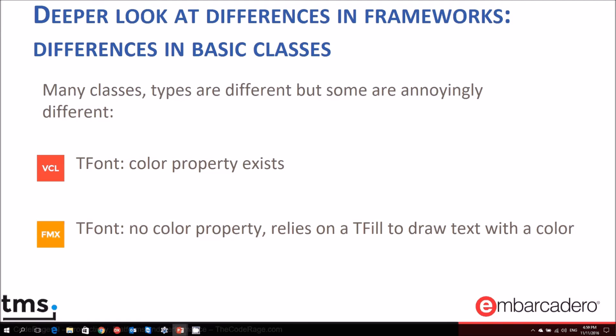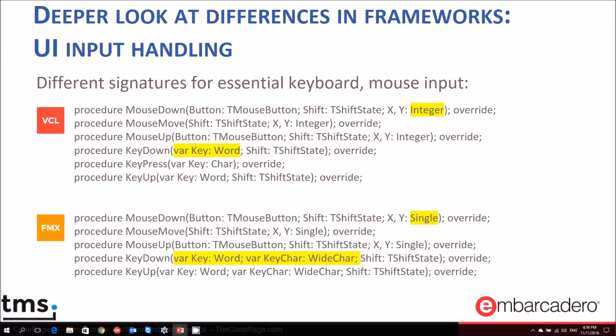Base classes used throughout UI controls also have important differences between VCL and FireMonkey. One example is the TFont class, which has a color property in VCL but does not have a color property in FireMonkey. Instead, FireMonkey relies on a TFill to draw text with a specific color.